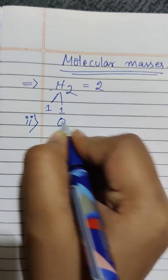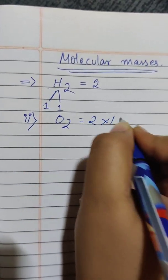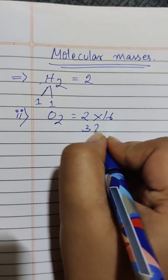Second, O2. Twice oxygen's mass. Thirty-two.